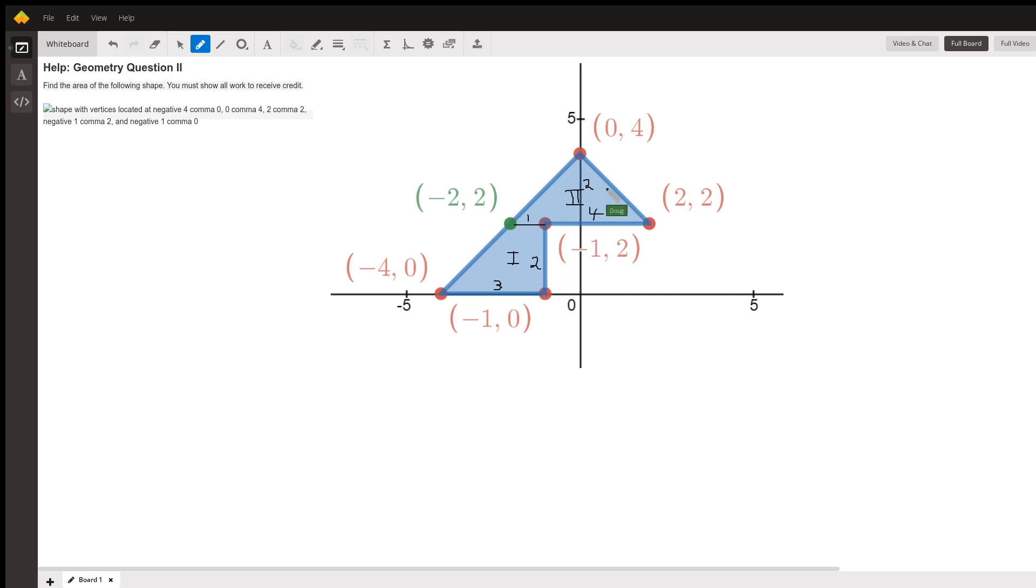So the area of a triangle, one-half base times height. Area of a trapezoid is the height times the average of the two bases. Sometimes written as one-half the height times the sum of the two bases. I'll let you take it from there.